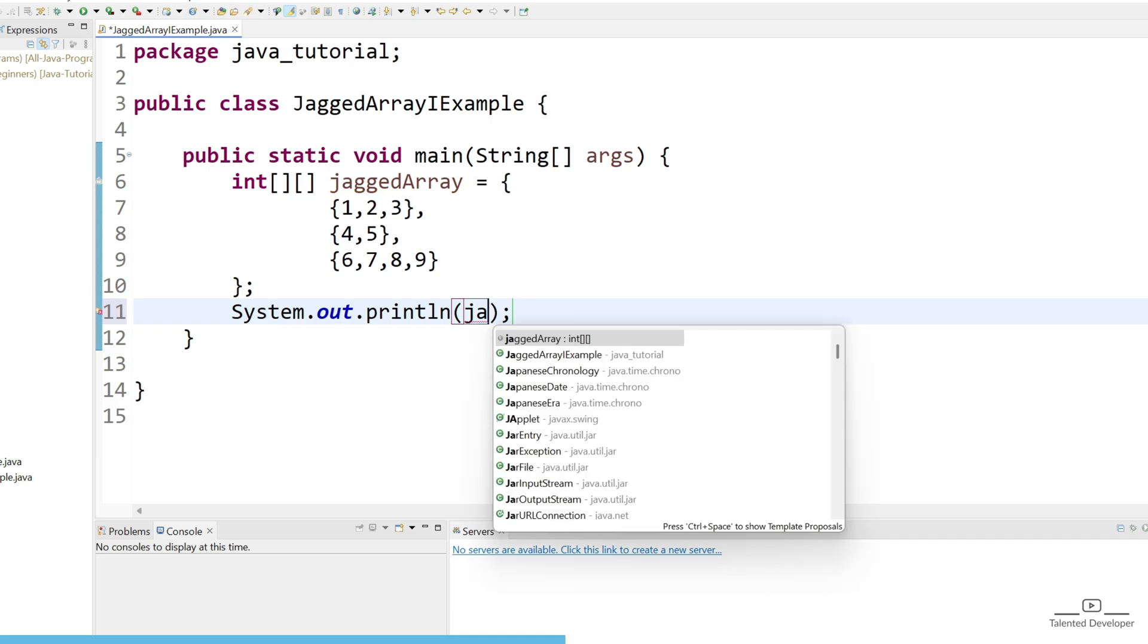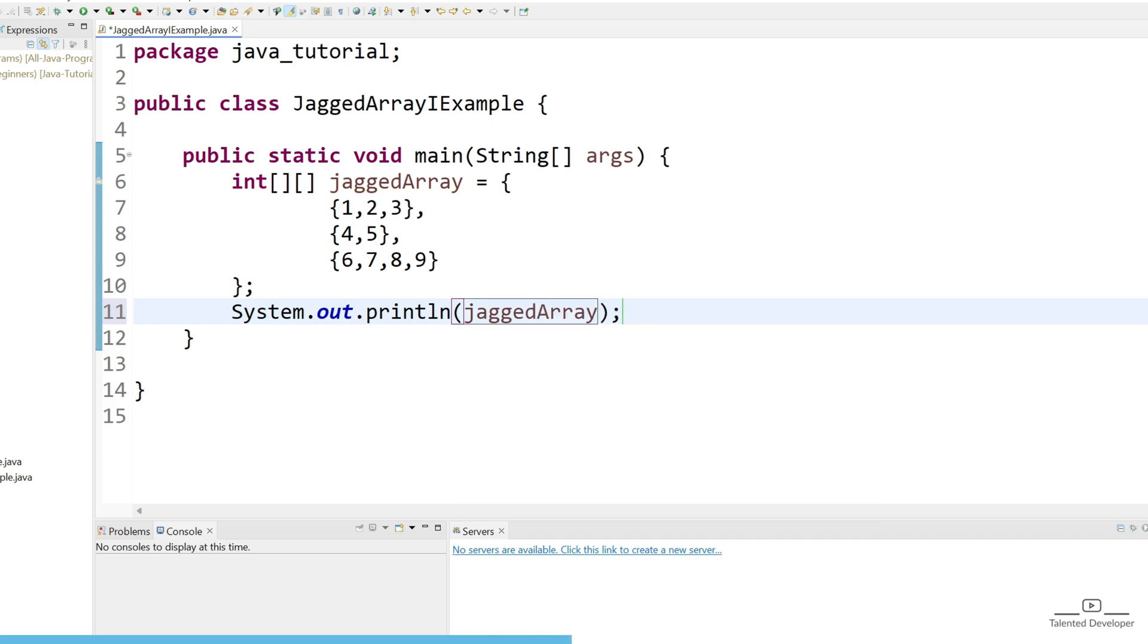Let's try to access the value 6. How can we access it? Just use System.out and give the variable name as jaggedArray with the index position. The row will be 2 and the column will be 0. Let's run. You can see we are getting the value as 6.